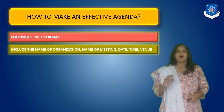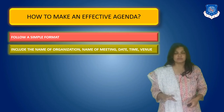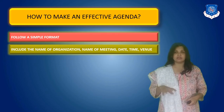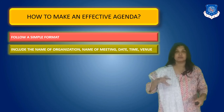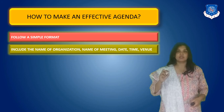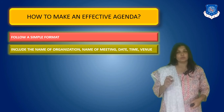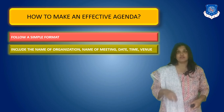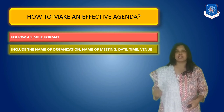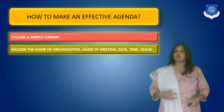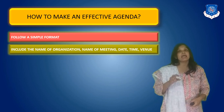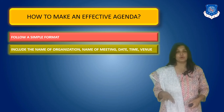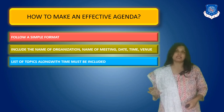Secondly, include the name of the organization, the name of the meeting — whether it is a sales meeting, a marketing meeting, a production meeting — write down the name of the meeting, the date on which the meeting is going to be held, the time of the meeting with from and to time so the participants know how long it will take, and the venue where the meeting is going to take place. The agenda starts with all this information.